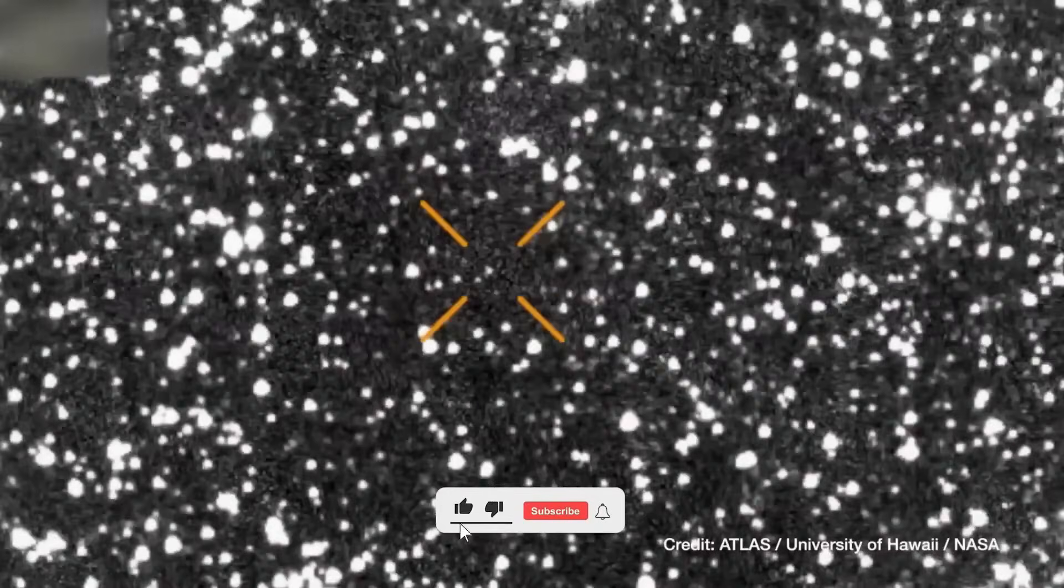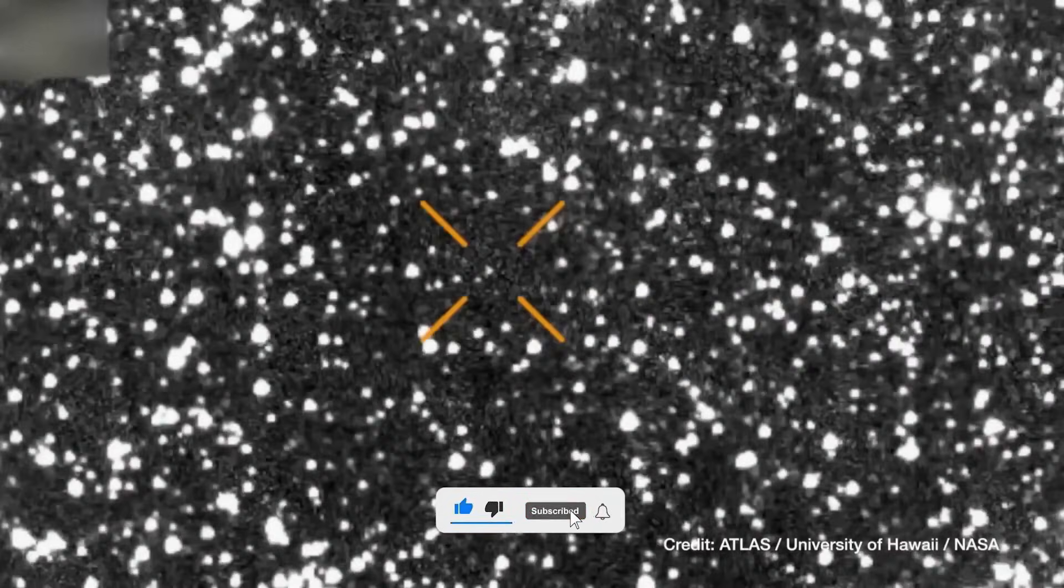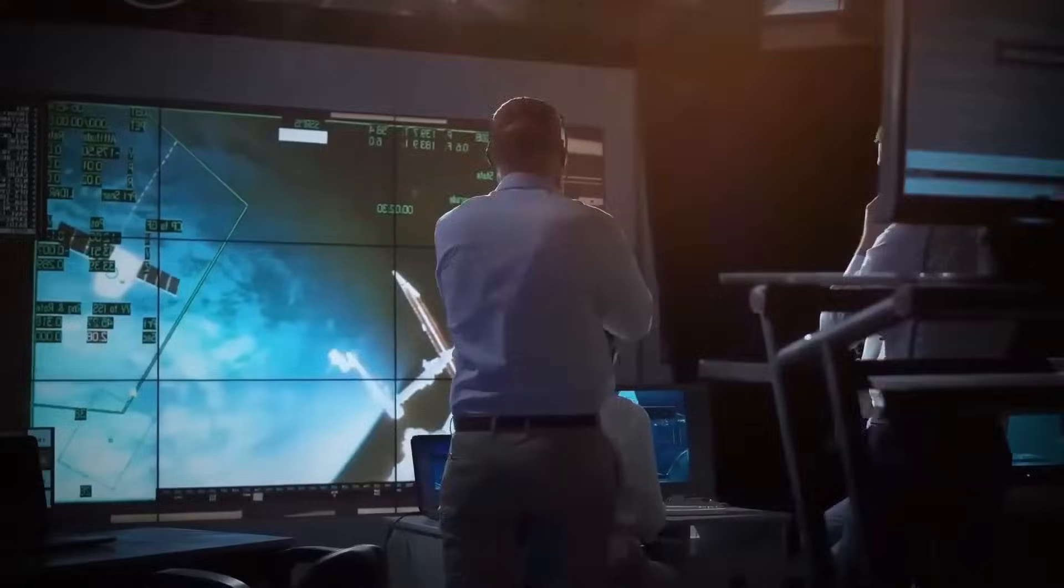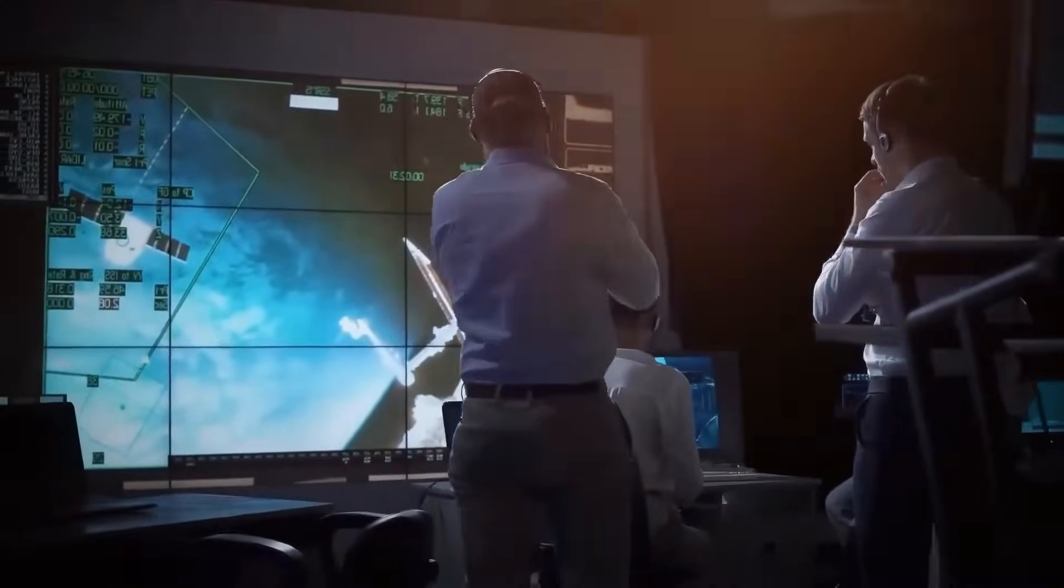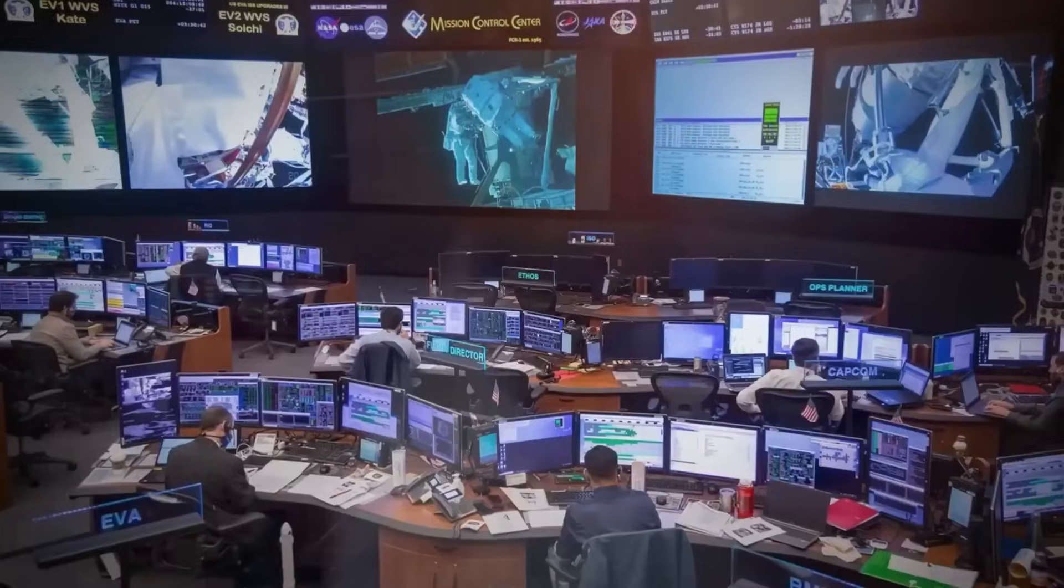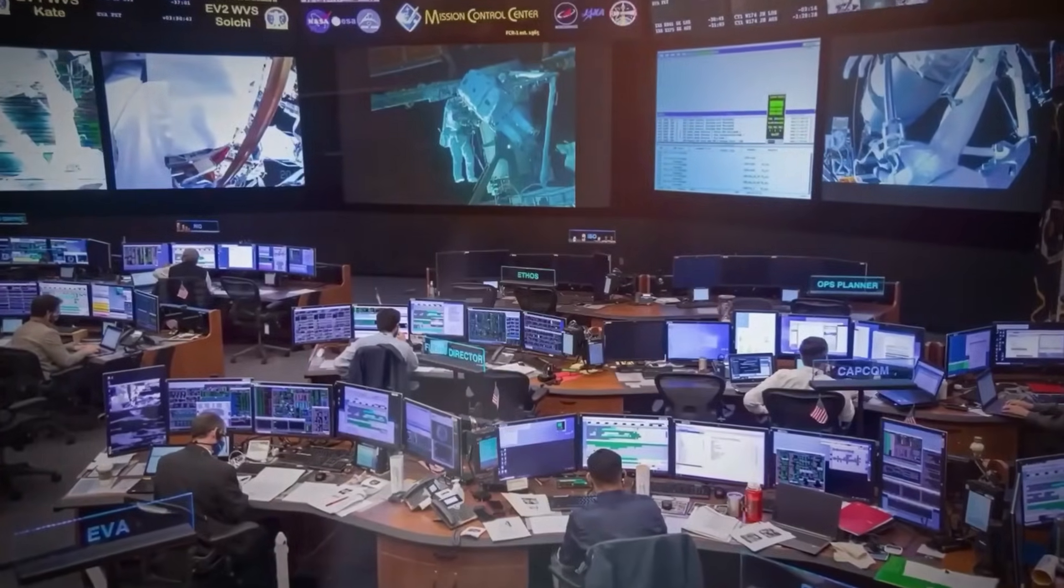As Atlas approached perihelion, astronomers anticipated the possibility, though slim, that sunlight might penetrate deep enough to expose unprocessed interior layers, but most models suggested it would remain too shallow.